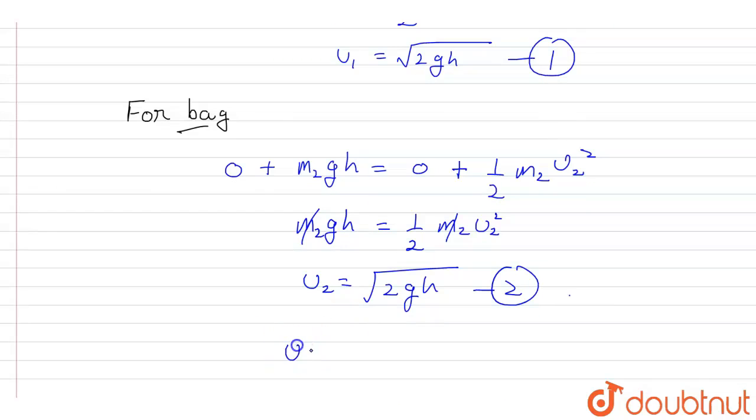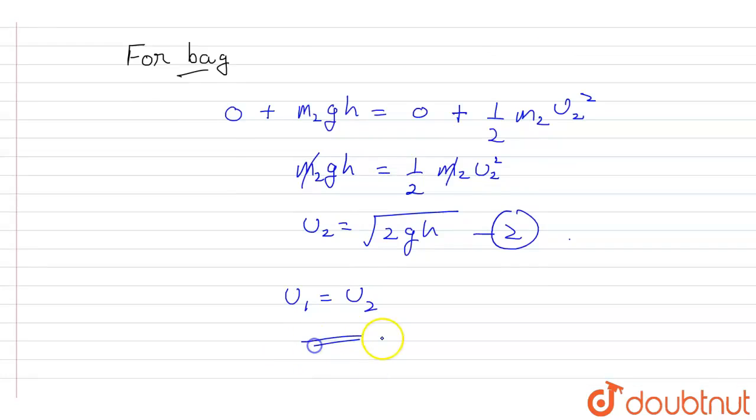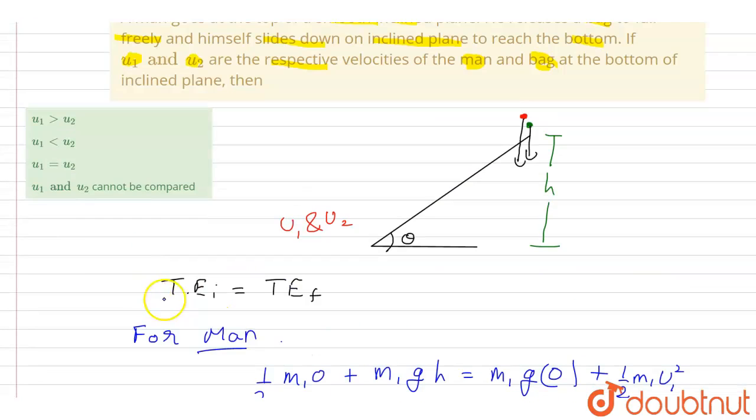Therefore the relation between u1 and u2 is option C, u1 equal to u2.